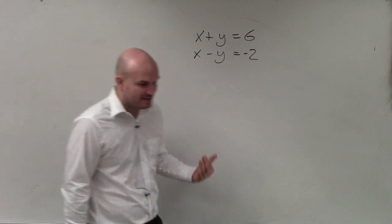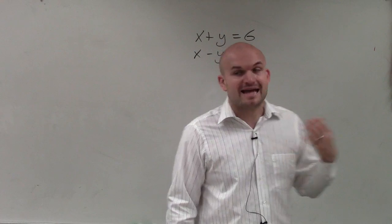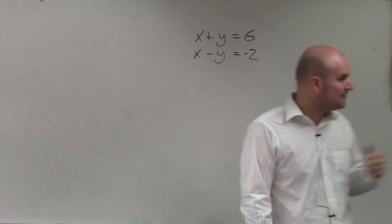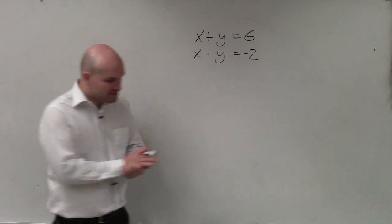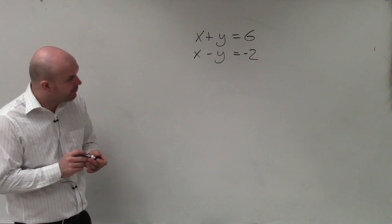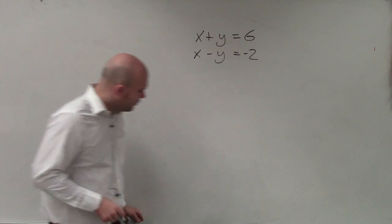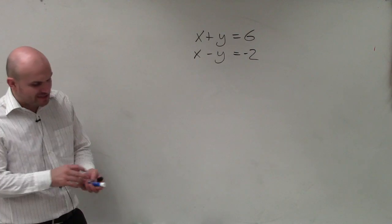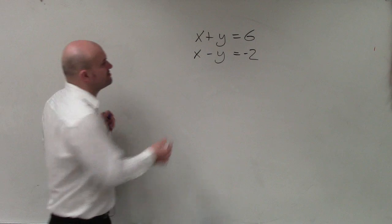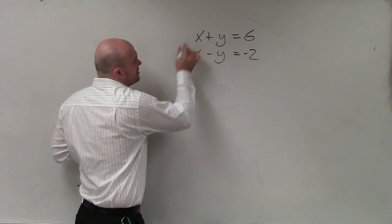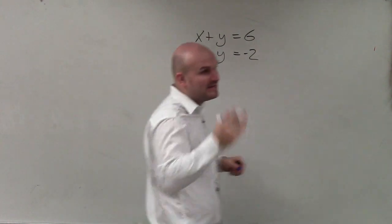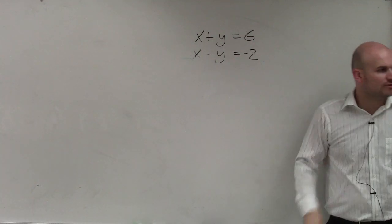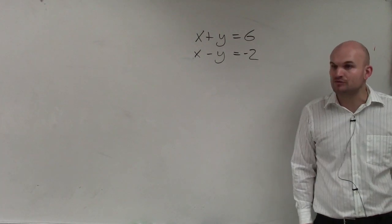When looking at the addition method, basically all we're going to be doing is adding or subtracting our equations to eliminate a variable. There are a couple of things that need to happen when we apply the addition method. When we are looking into the elimination method, basically what we want to do is make sure that our variables are first aligned — that means x's over x's, y's over y's, and the equal sign is over the equal sign.